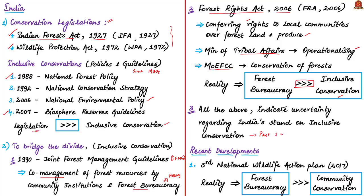The uncertainty regarding India's stand on inclusive conservation can be observed since the past three years. All policies wish to do away with community involvement in conservation of biodiversity. Some of the recent developments mentioned by the author that substantiate claims of India moving away from the community-involved conservation approach are as follows. First, the Third National Wildlife Action Plan was introduced in 2017 with the stated intent of complying with international commitments, but this action plan highlights that locals hinder conservation.